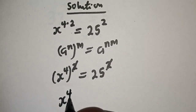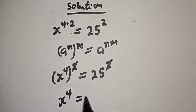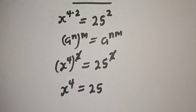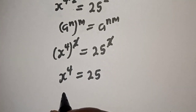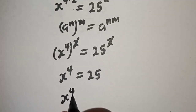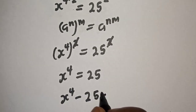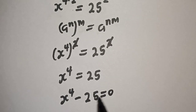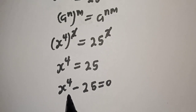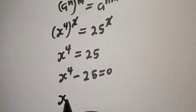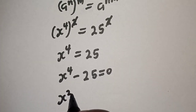So we have s raised to power 4 is equal to 25. Bringing this to this side, this is s raised to power 4 minus 25 is equal to 0.